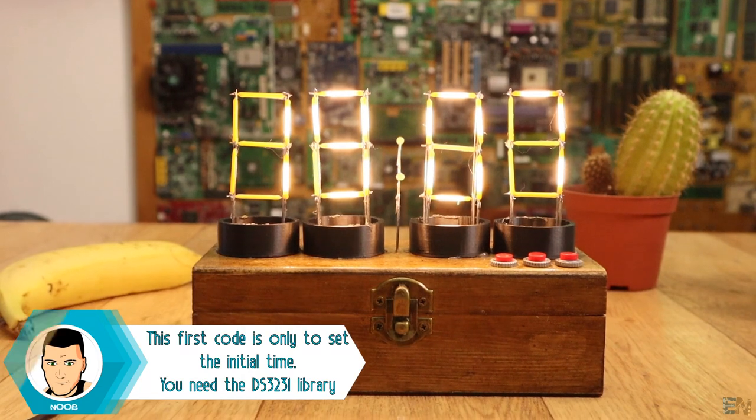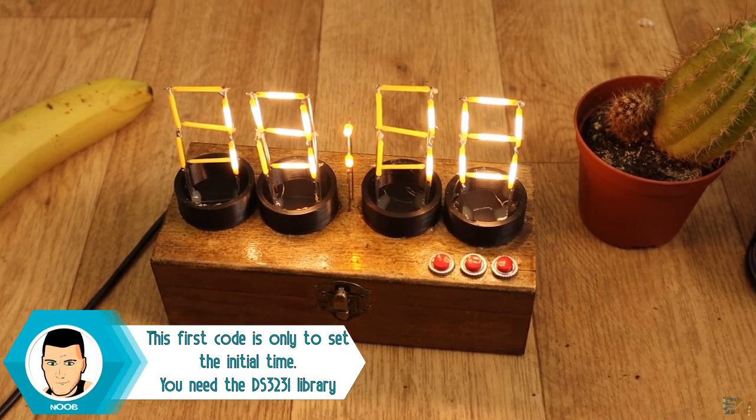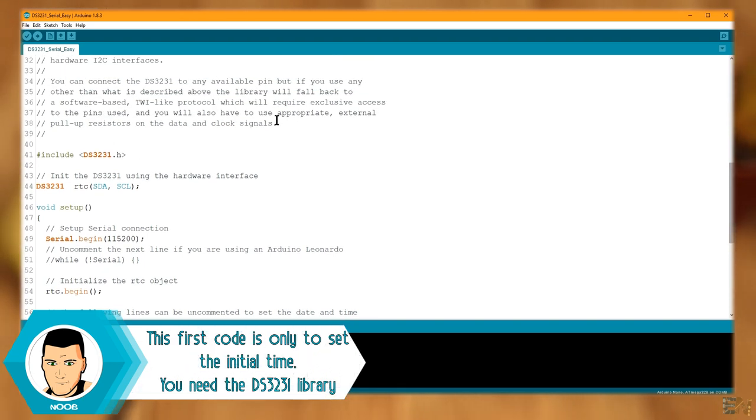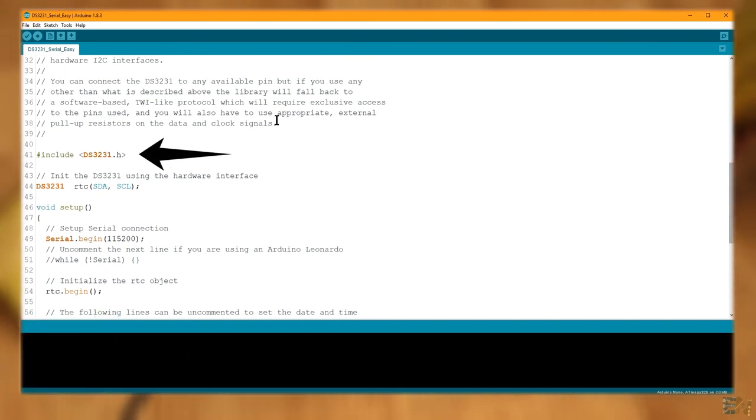Now the clock is ready, all we have to do is to program it. Download this code from below. This first code is very short. Make sure you also download the real-time library and install it to your Arduino IDE.